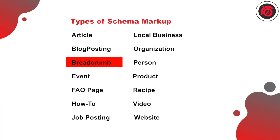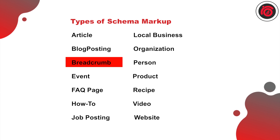The next schema is breadcrumb, which can contain information regarding breadcrumb navigation. You can also include faceted navigations if you are running an e-commerce campaign or using filters for filtering products. The next schema is event schema, which can be used by event management companies or landing pages where an event is happening.